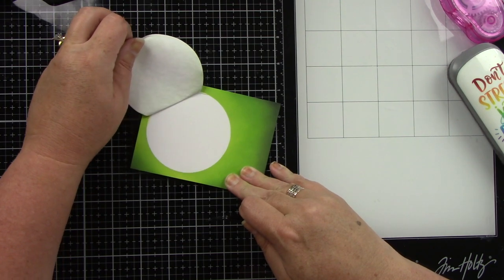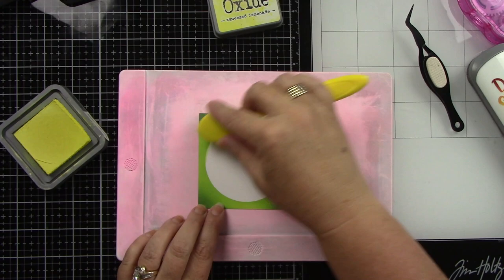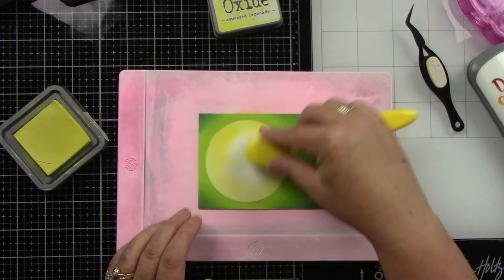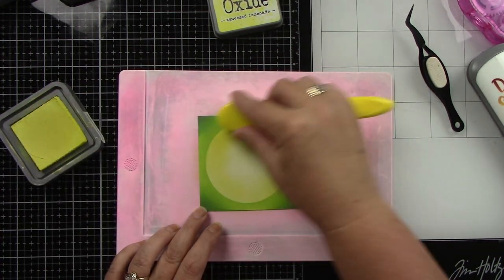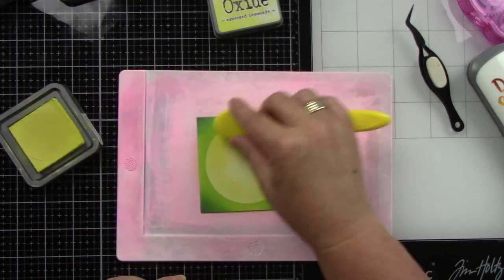I decided to bring in some Squeezed Lemonade to add color to this moon. Going darker around the edges, it'll actually go off into the green a little bit, which I love because it gives that glowing moon effect.